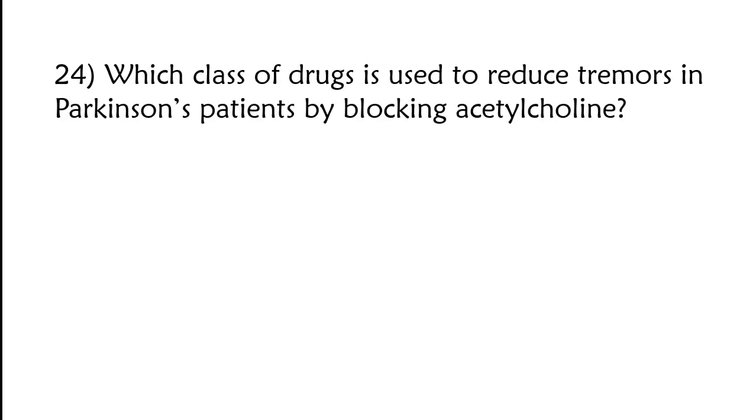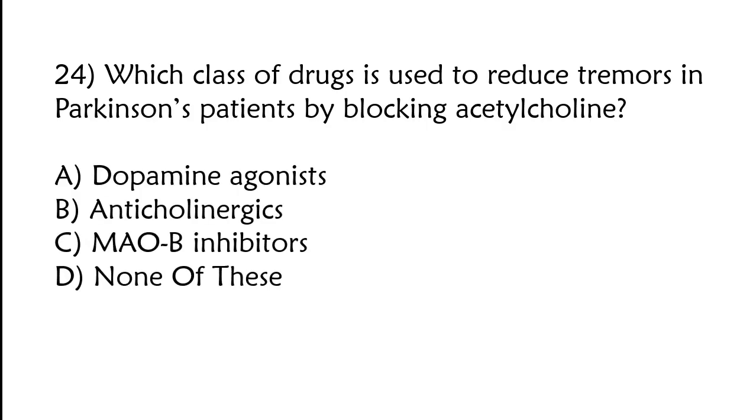Which class of drugs is used to reduce tremors in Parkinson's patients by blocking acetylcholine? Dopamine agonist, anticholinergics, MAO-B inhibitors, none of these. The correct answer is option B, anticholinergics.